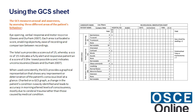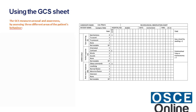Using the GCS Sheet: the GCS measures arousal and awareness by assessing three different areas of the patient's behaviour – Eye Opening, Verbal Response, and Motor Response. Each area is allocated a score, enabling objectivity, ease of recording, and comparison between recordings.